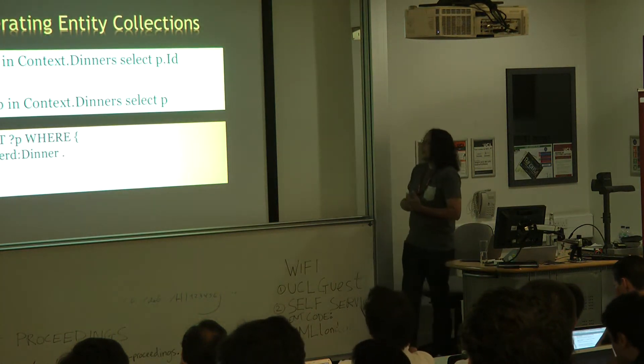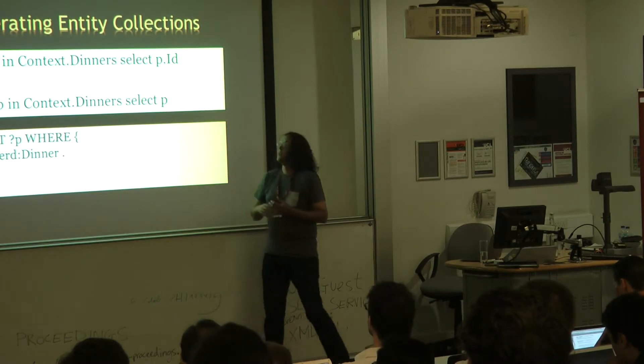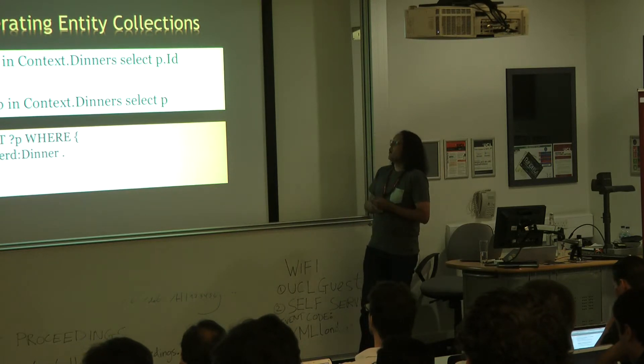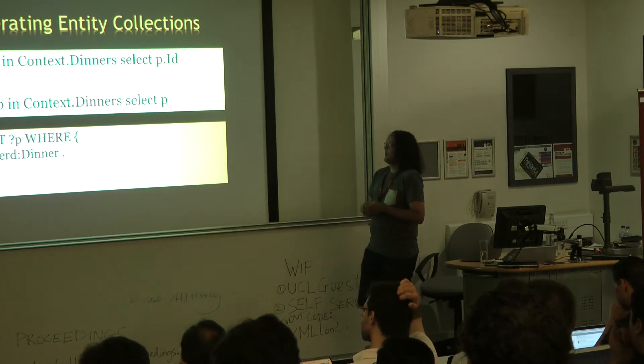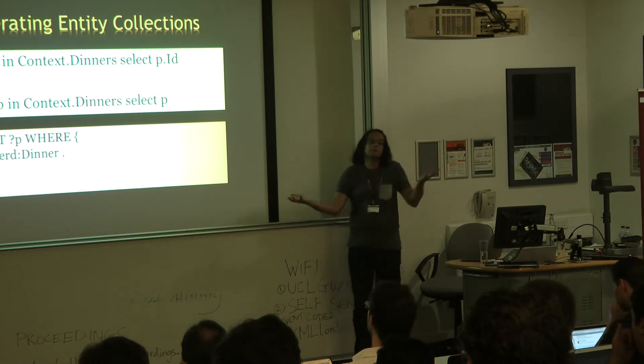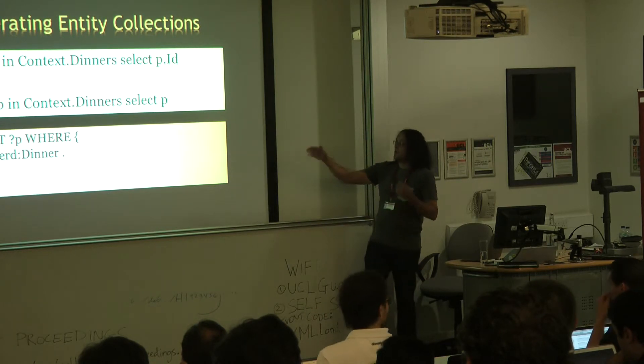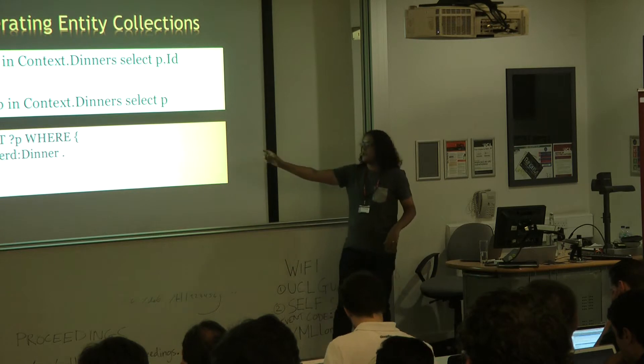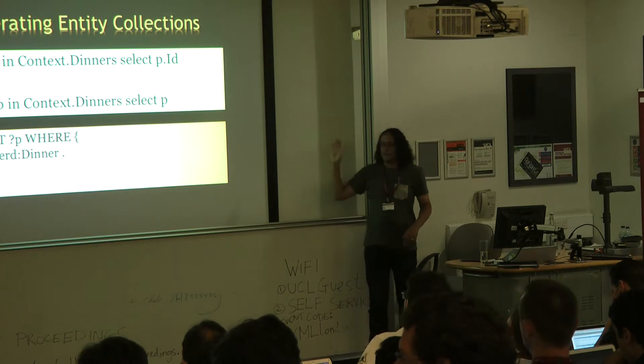So the way that it looks from a programmer's point of view is that they are basically dealing with collections on their context object. So if I want to select, or sorry, in this case I want to iterate over all of the members of a collection, then I would do something like, from p in context.dinners, select p. So iterate over everything that's in the dinners, and return them. Which gets converted into SPARQL, which is just select p where p is a, and then whatever our URI is. I've compressed my URIs to CURIEs because you don't have room on slides otherwise. But it would be a full URI.